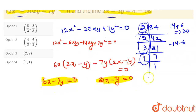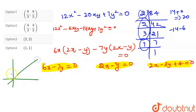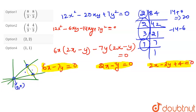The third line is given as 2x − 3y + 4 = 0. The first two lines pass through the origin — putting (0,0) gives 0 = 0. So two lines pass through the origin and the third line does not, forming a triangle. One vertex is already (0,0), and we need to find the two other intersection points.